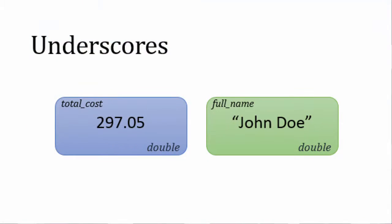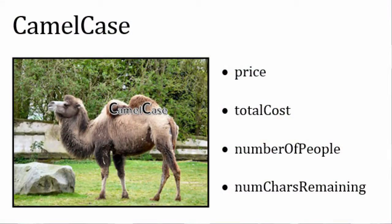So how can we name variables with more than one word if we can't use spaces? For instance, a variable for the total cost may be named total underscore cost. Another way is to use camel case, which means the names look kind of like a hump on a camel because each new word starts with a capital. An example is numberOfPeople.